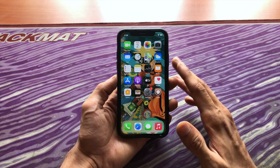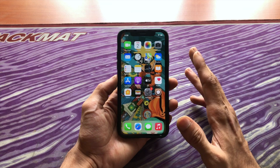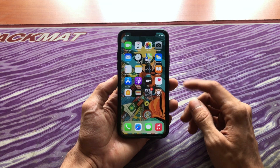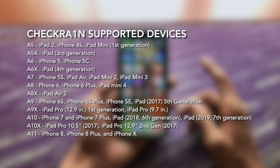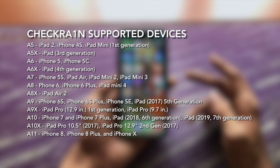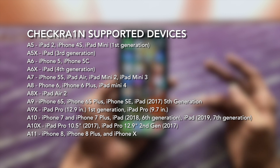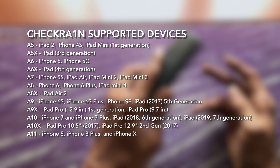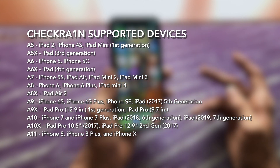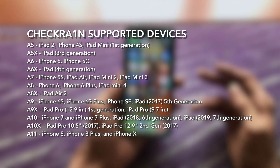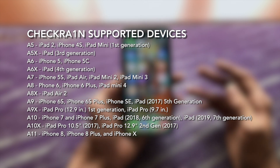First of all, you need to know that all these versions are jailbreakable if you have an iPhone 6s, iPhone SE first generation, iPhone 7, iPhone 8, or an iPhone 10. You can jailbreak with a tool called CheckRain.